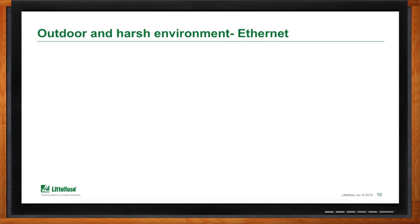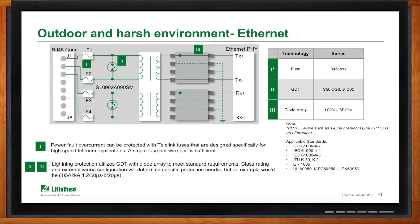Going outdoors with Ethernet into a harsh environment requires additional protection. For overcurrent, the TeleLink 461 series fuses are specifically designed for high-speed telecom applications — you only need one fuse per wire pair. For lightning protection, use a GDT combined with a diode array: the GDT goes on the front side of the transformer and the diode array on the back side. Class ratings determine the specific protection needed — for example, 4 kilovolts at 2 kiloamps. Recommended GDT series are SGC, G6, and C65; the diode array options are the LC03 series and SP40 series.